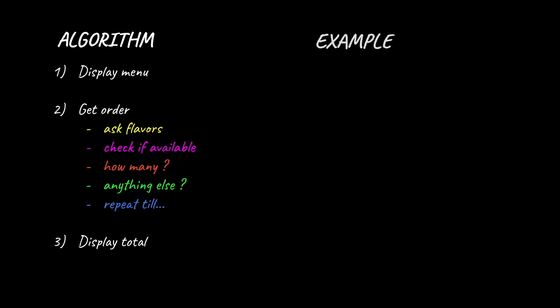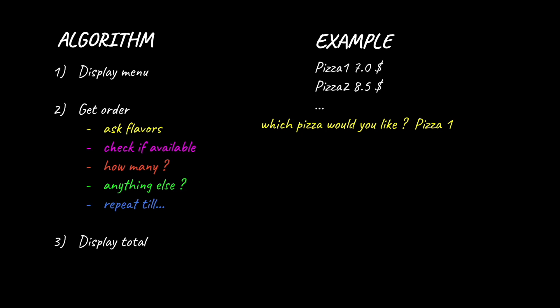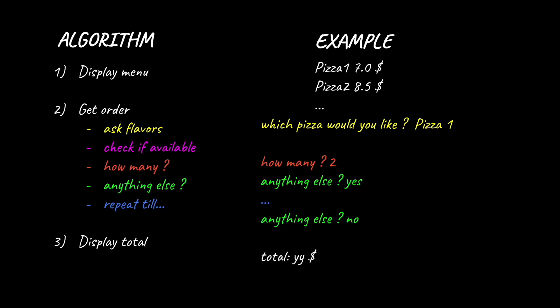Let's write down an example. First we're gonna see the menu displayed — pizza1 for $7, then pizza2 $8.50. We're gonna ask for the pizza and let's say the customer wants pizza1. This one is available so we're gonna ask for how many they want, let's say two. Next we're gonna ask if they want anything else and repeat this till they say no. Finally we're gonna display the total. However, sometimes the customer would like a pizza we don't have. In that case we're gonna display a message like 'sorry we don't have that' and right after ask if they want anything else.